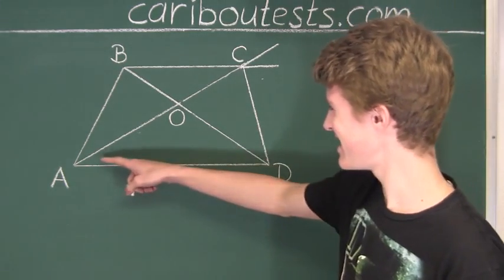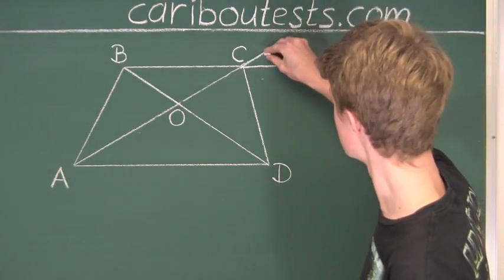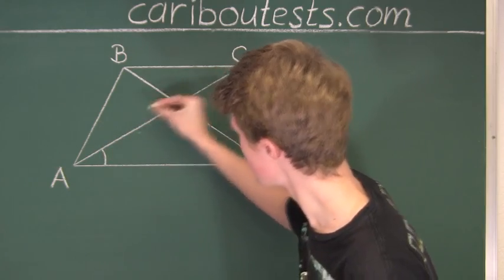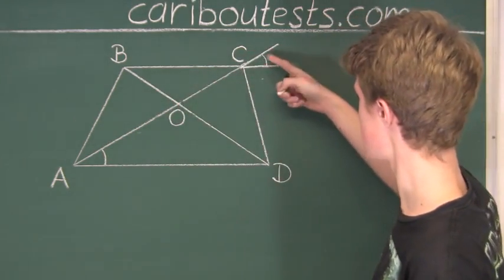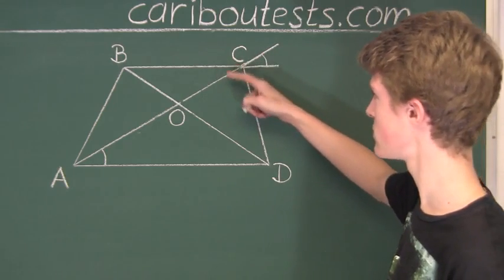So we can see that this angle is equal to this angle. And of course, we can see that since these two are opposite angles, we know that this must also be equal to this.